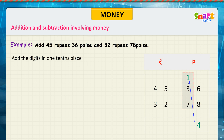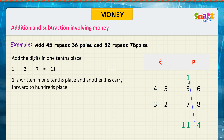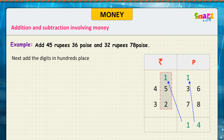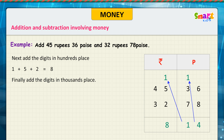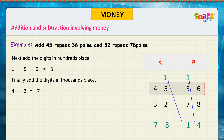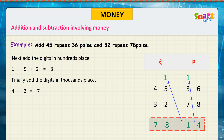Then add the digits in the tens place. 1 plus 3 plus 7 is equal to 11. 1 is written in the tens place, and another 1 is carried forward to the hundreds place. Next, add the digits in the hundreds place. 1 plus 5 plus 2 is equal to 8. Finally, add the digits in the thousands place. 4 plus 3 is equal to 7. Therefore, 45 rupees 36 paise plus 32 rupees 78 paise is equal to 78 rupees 14 paise.